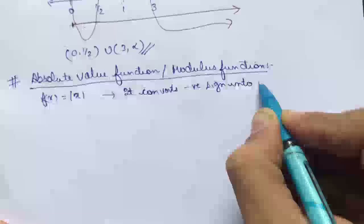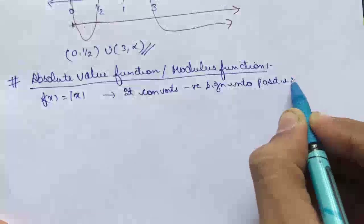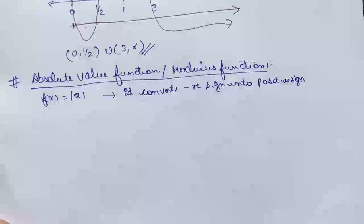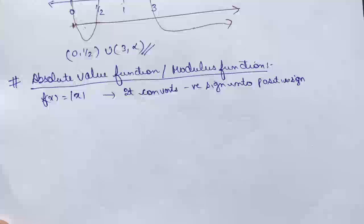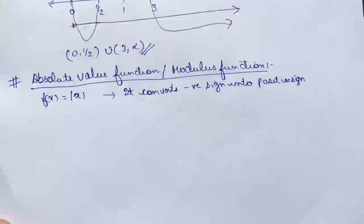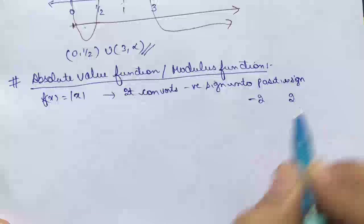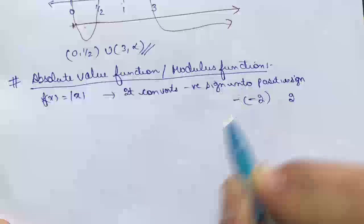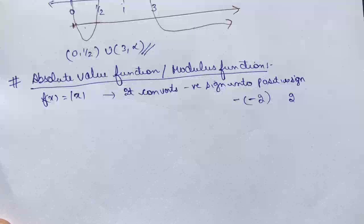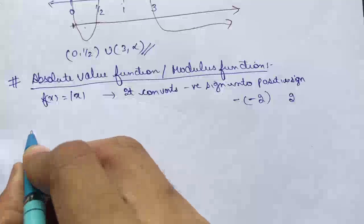Now there comes the absolute value function, or modulus function. f(x) = |x|. What does the modulus actually do? It converts a negative sign into a positive sign. If you take mod of −2, it becomes 2. If mod of −3, it becomes 3. If mod of −4, it becomes 4. For positive values like 2, the mod function does nothing — it stays 2.